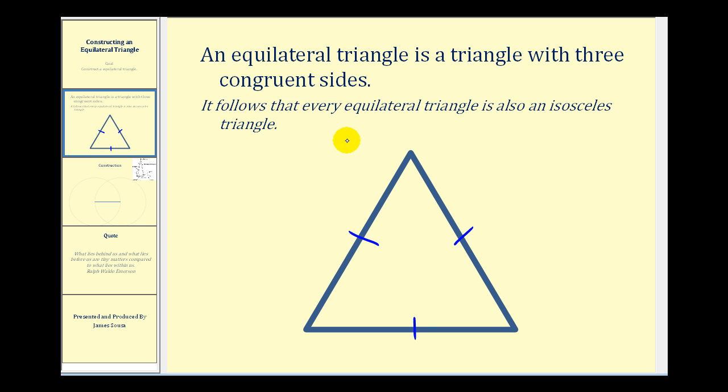And since every equilateral triangle is also an isosceles triangle, we know the angles opposite two congruent sides would also be congruent. So an equilateral triangle is also equiangular, or all three angles would be congruent.